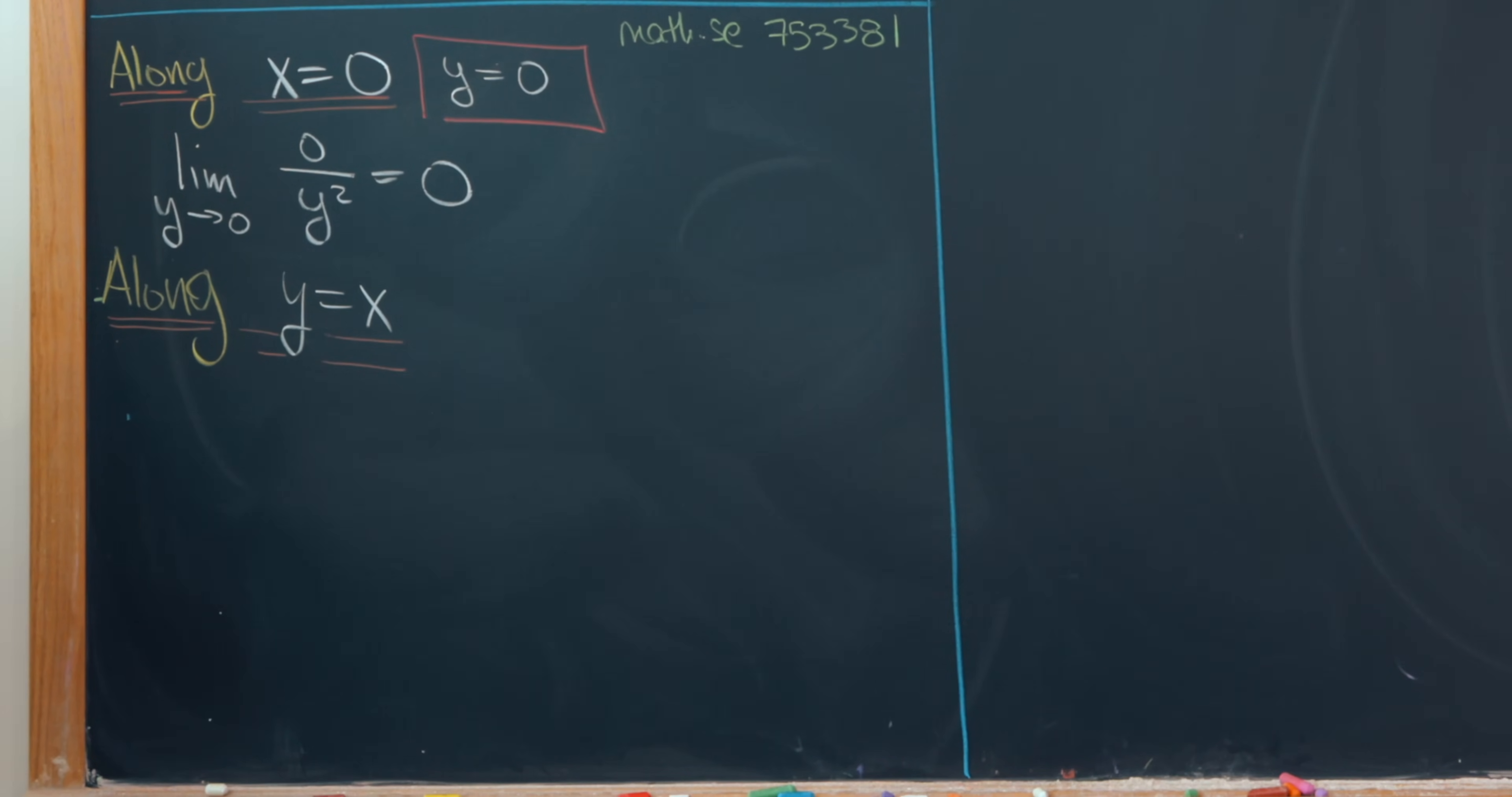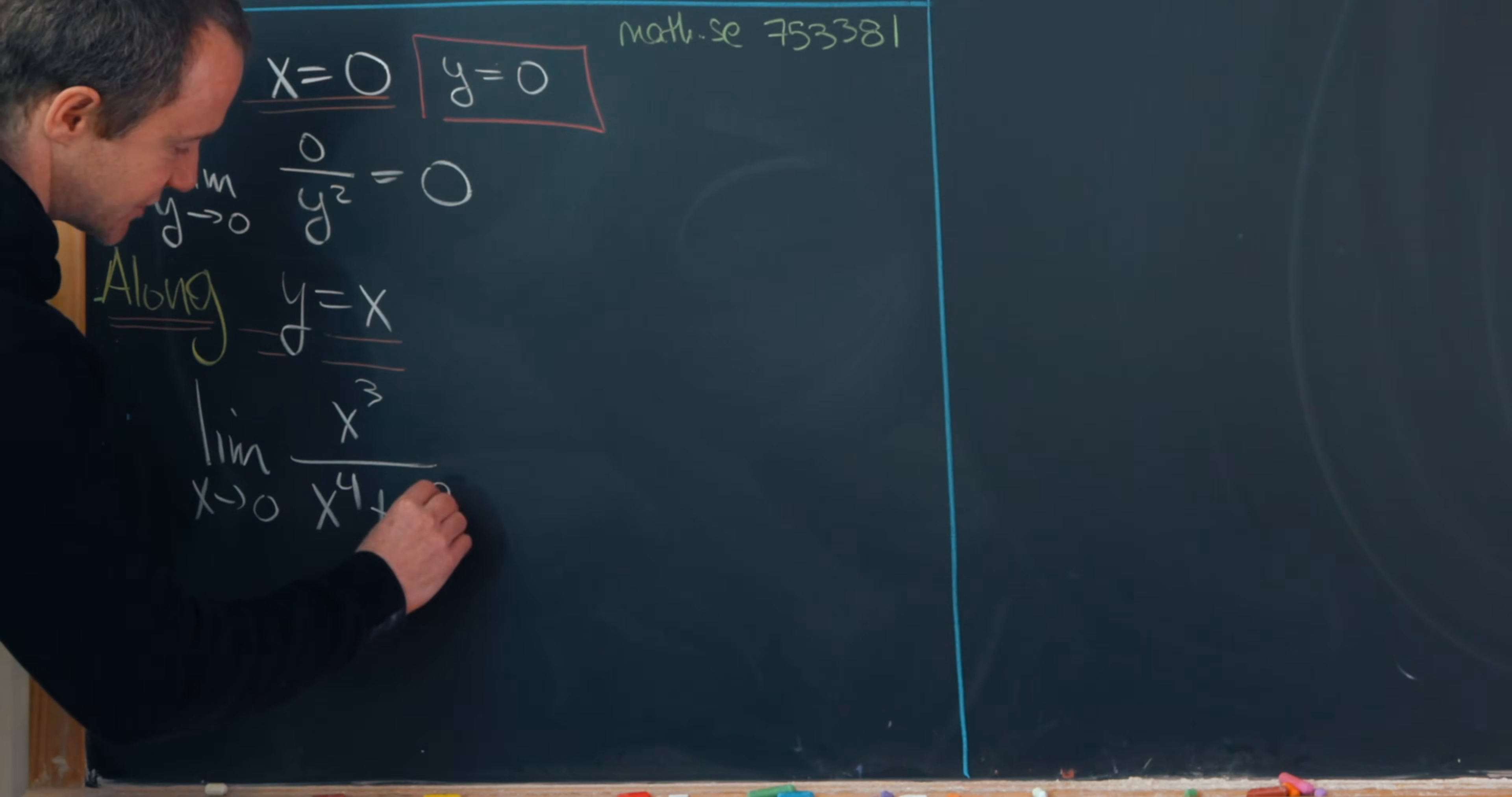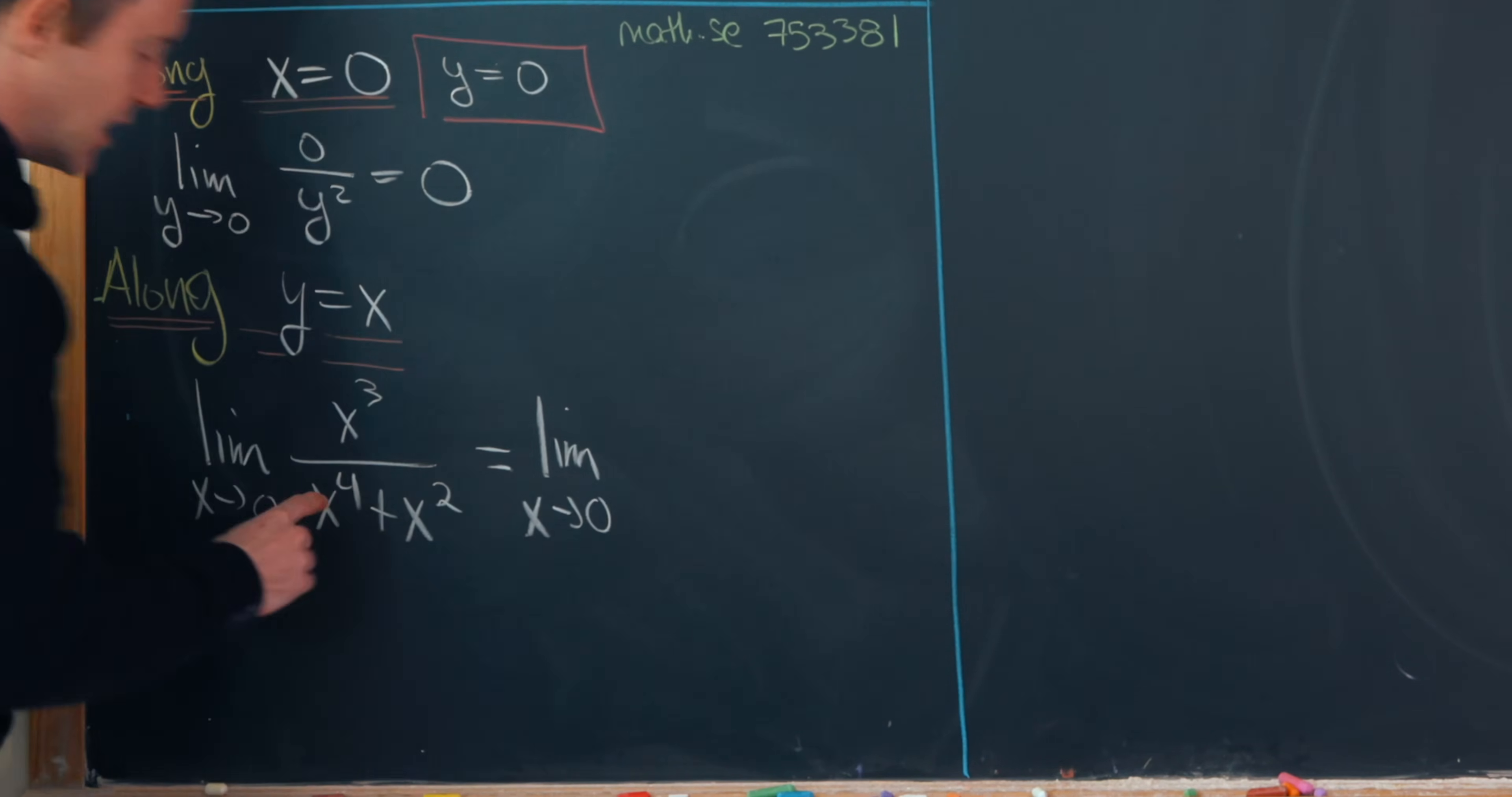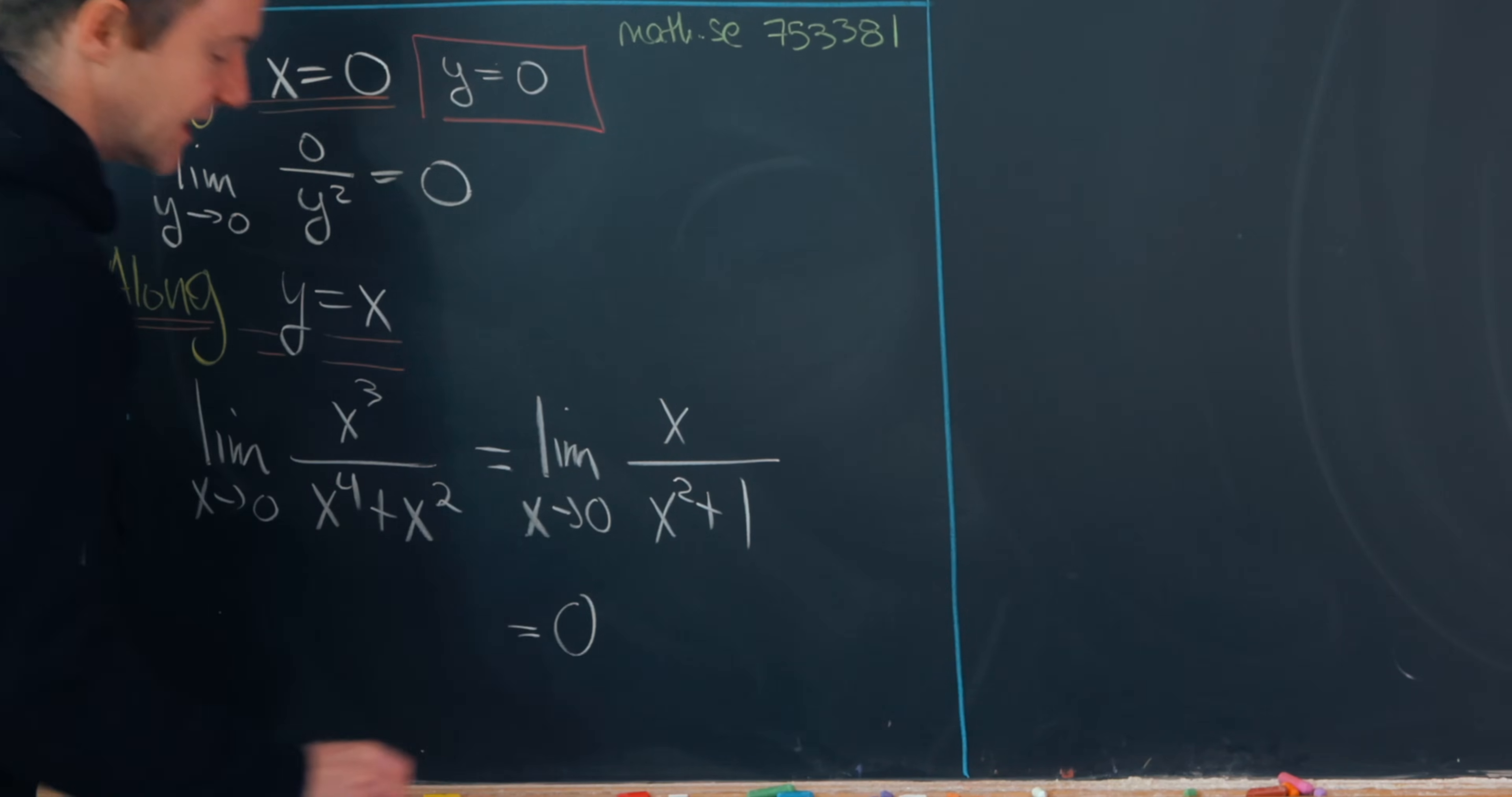Now let's look along the line y equals x. So that means our limit will collapse to the limit as x goes to zero of x cubed, because y is equal to x. So we just have x squared times x in the numerator. Then in the denominator we have x to the fourth plus x squared. Now we can factor an x squared out of the denominator and cancel it with what's going on in the numerator, leaving us with x over x squared plus one. But now taking that limit you'll see that we get zero.